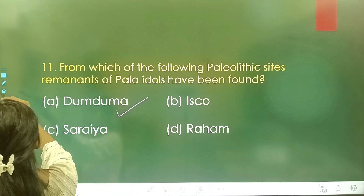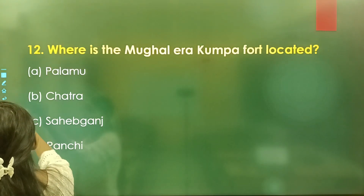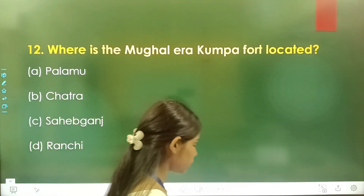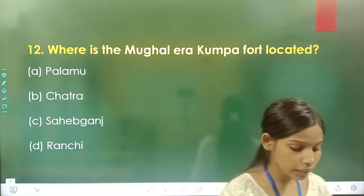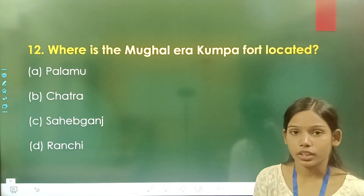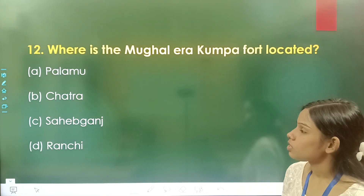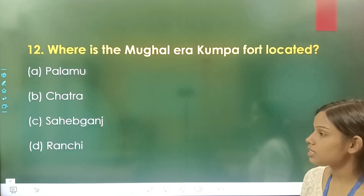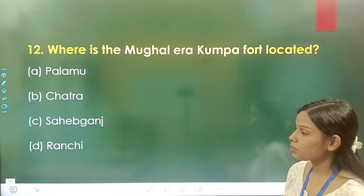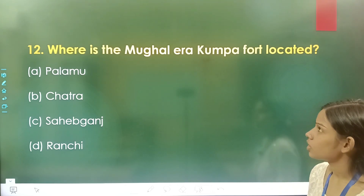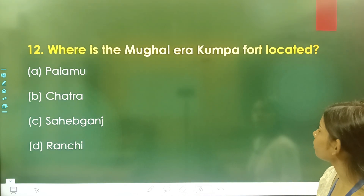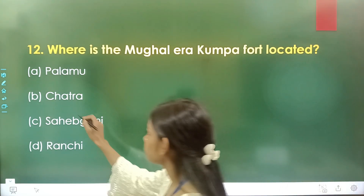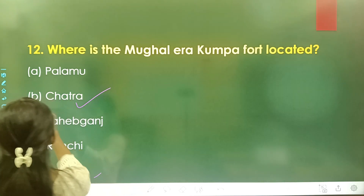Question number 12: In which district is the Mughal era Kumpi fort located? Option A is Palamu, option B is Chhatra, option C is Sahebganj, and option D is Ranchi. The correct answer is option B, Chhatra.